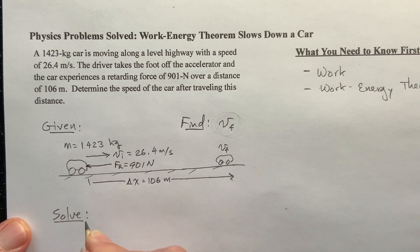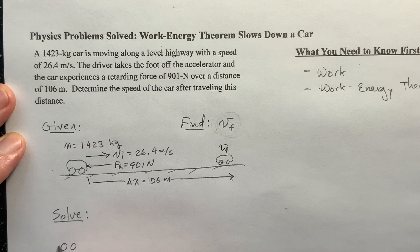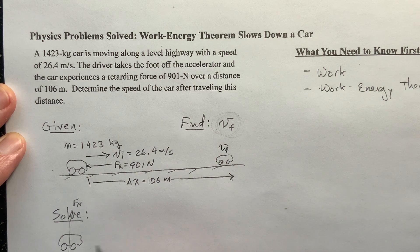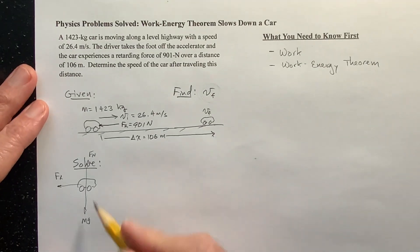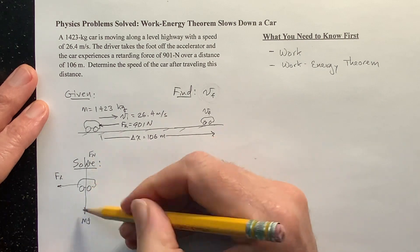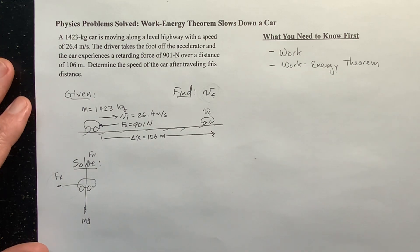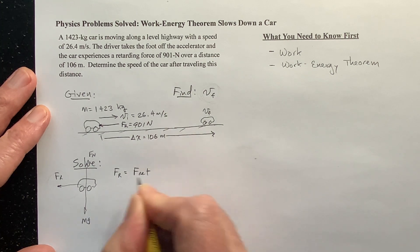Let's solve it. This force is going to slow this car down, and I'm going to draw a free body diagram of the car. We've got gravity, we have a normal force, and then we have this retarding force going back like this. The normal force is just supporting the weight, so there's no net force there. The retarding force is my net force — there's nothing opposing it. So we can say the retarding force is equal to the net force. That's an important thing.